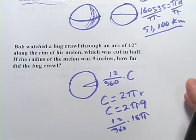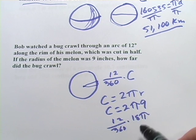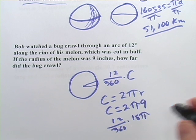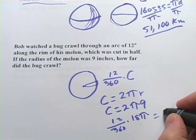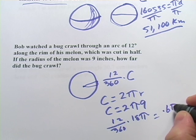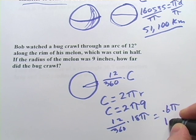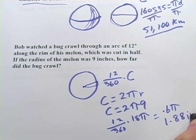And then at this point, you could go ahead and punch that out in your calculator, 12 times 18 times pi divided by 360. And I think what you should get, well, that comes out to, I think, 0.6 pi, which would be 1.88 inches.